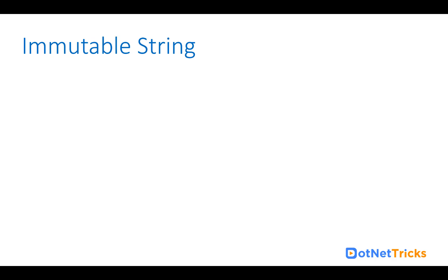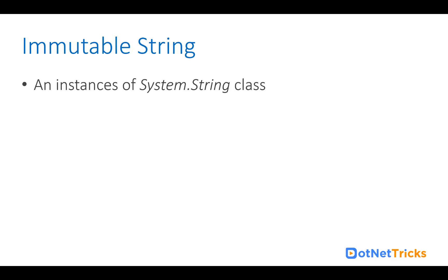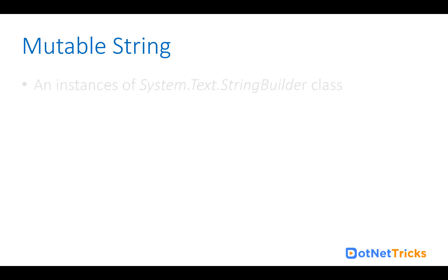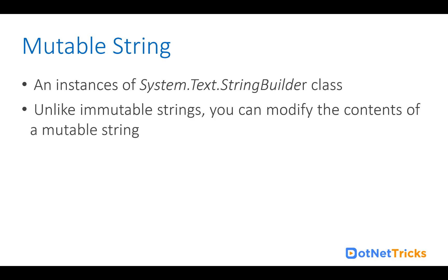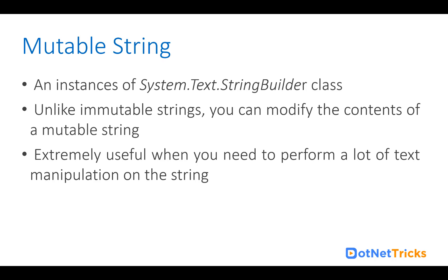Immutable strings are instances of the System.String class, and you cannot change or update the content of such a string — it is unmodifiable. Mutable strings are instances of the System.Text.StringBuilder class. Unlike immutable strings, you can modify and change the contents of a mutable string.